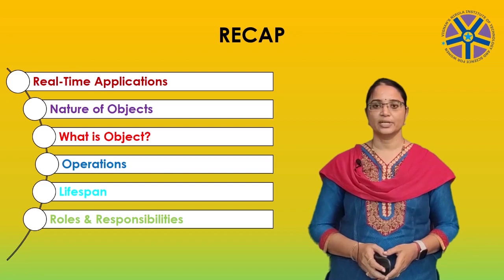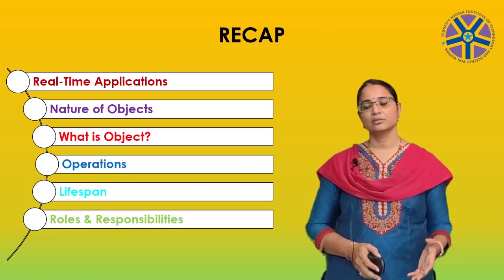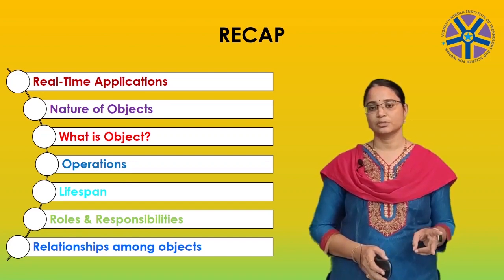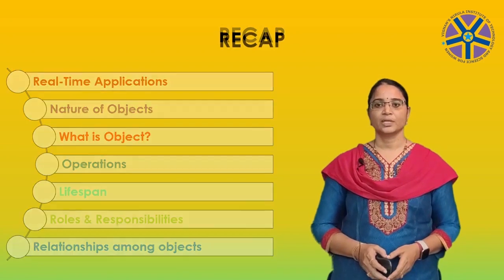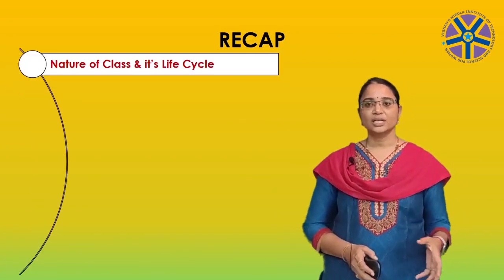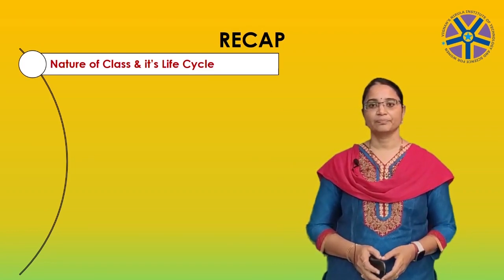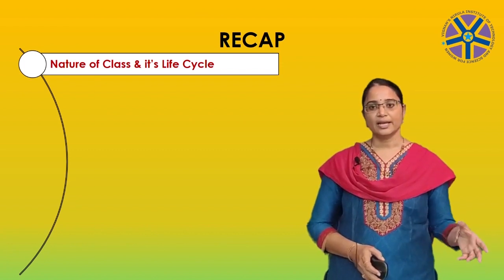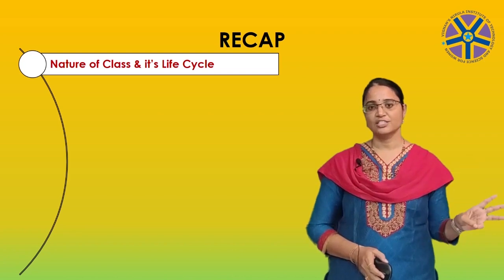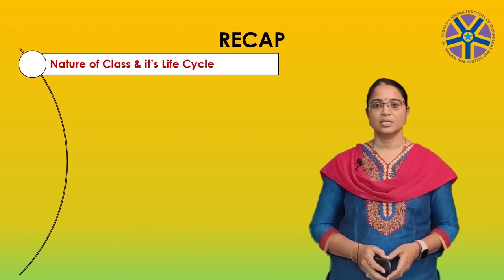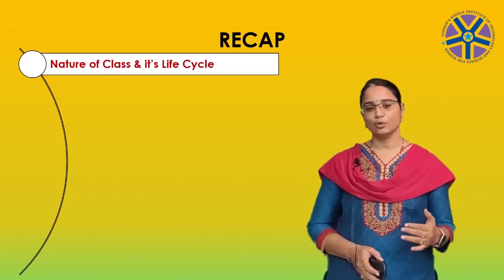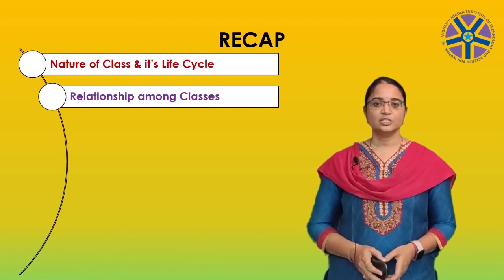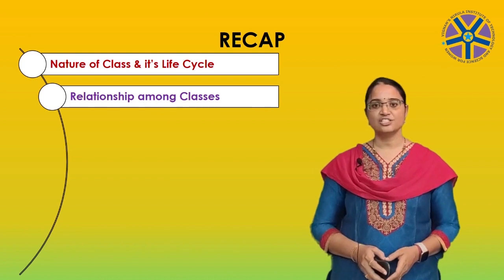Next we have gone through roles and responsibilities — a role is a mask and the responsibilities of a person who plays the role. We have seen the relationships among objects: two types — first, links, and second, aggregation. Next we have seen the nature of the class. A class is a set of objects that share common structure and common behavior. We saw an example using TV with three instances: Direct, John, and Job. We have seen the class life cycle, showing how a class interacts with other operations. Relationships among classes include association, inheritance, aggregation, using, instantiation, and meta class.